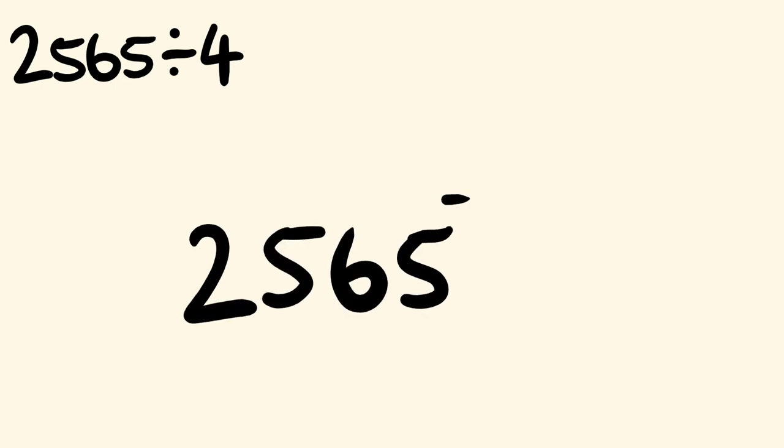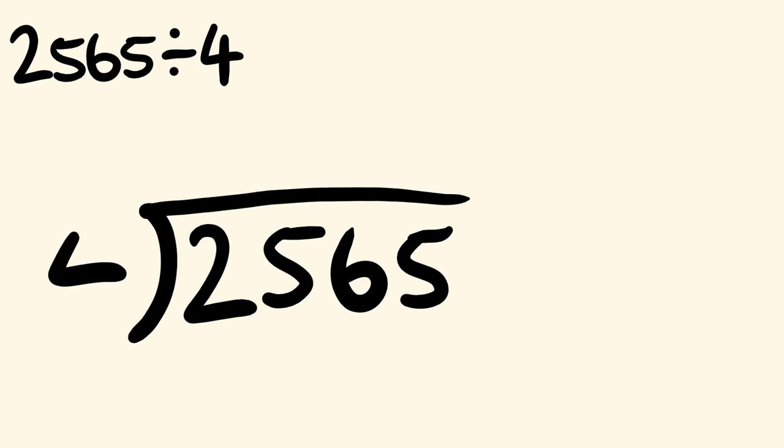Now let's have a look at our next example. We have 2,565 and we're going to divide this by 4. Now we're going to set this up exactly like we did the other ones. We have 2,565 and we put this around it dividing by 4. And once again moving left to right.